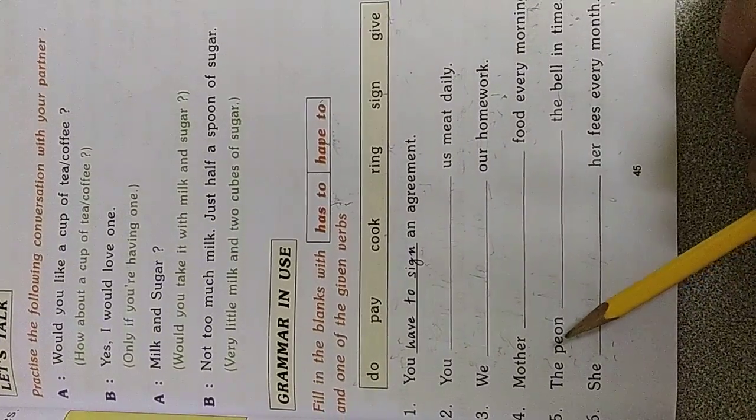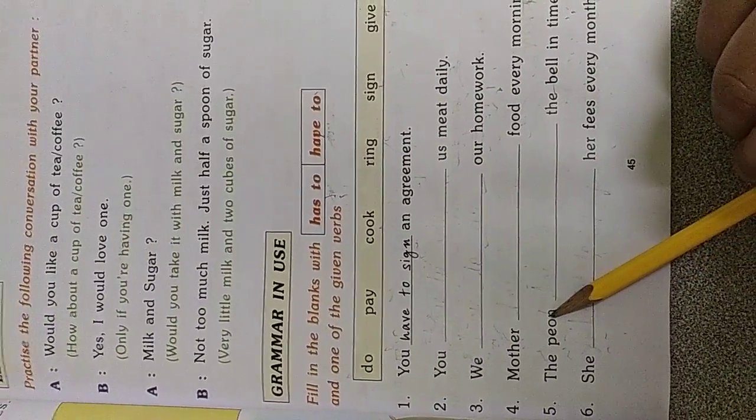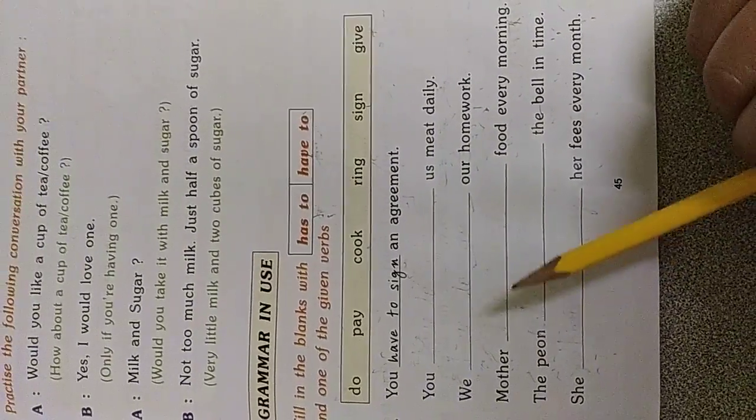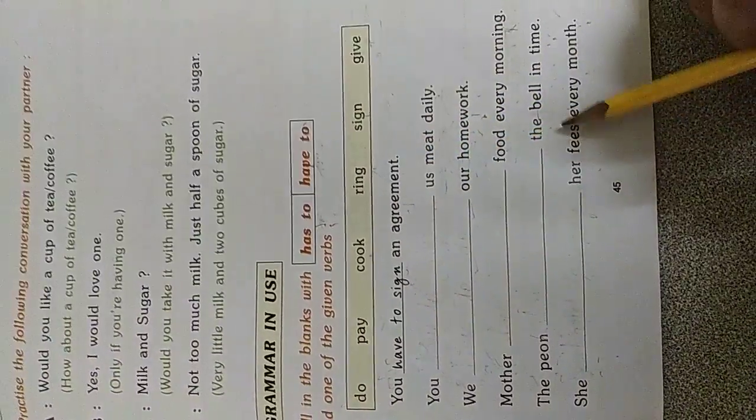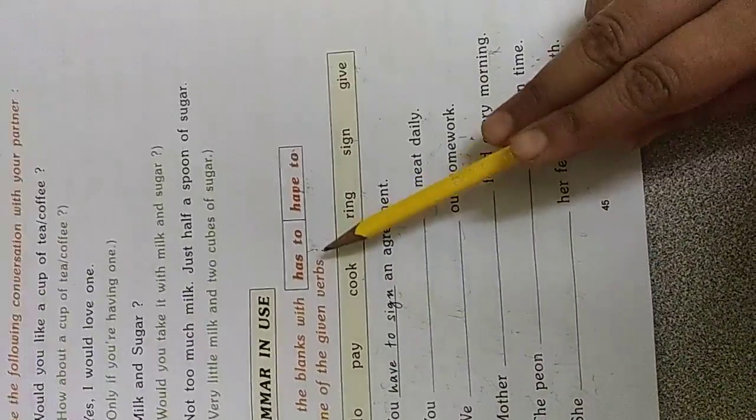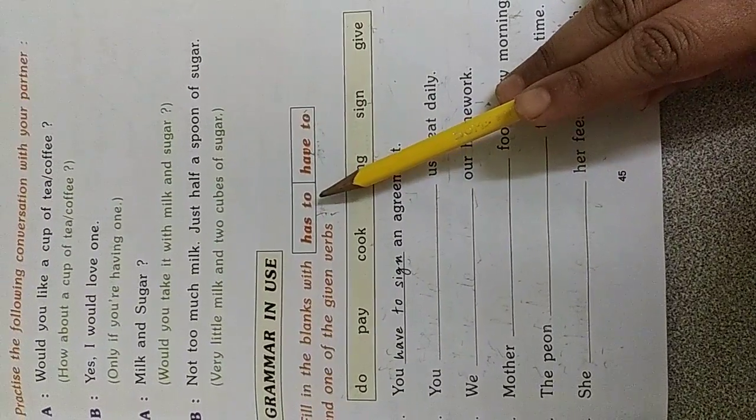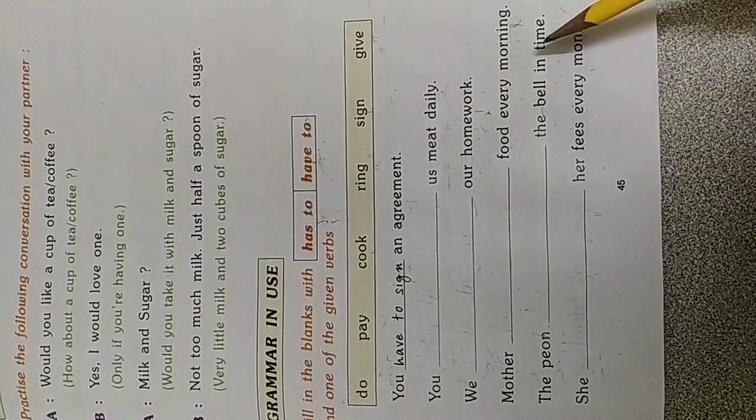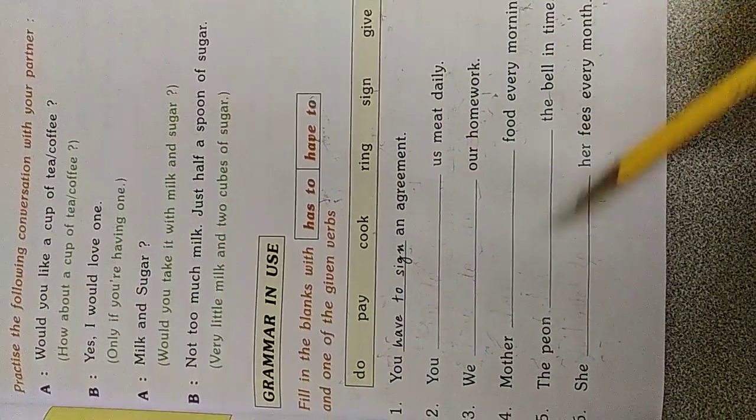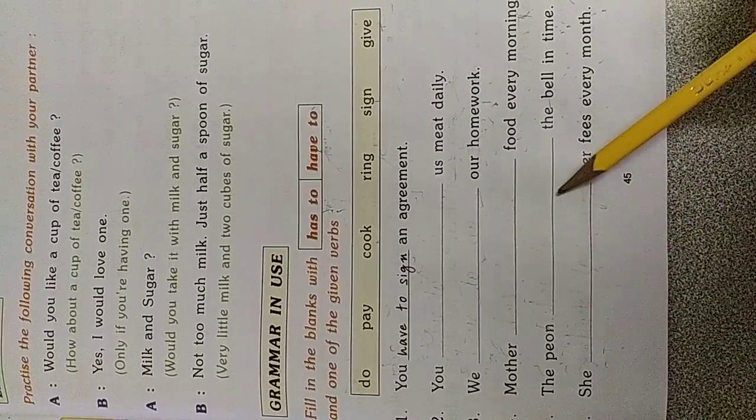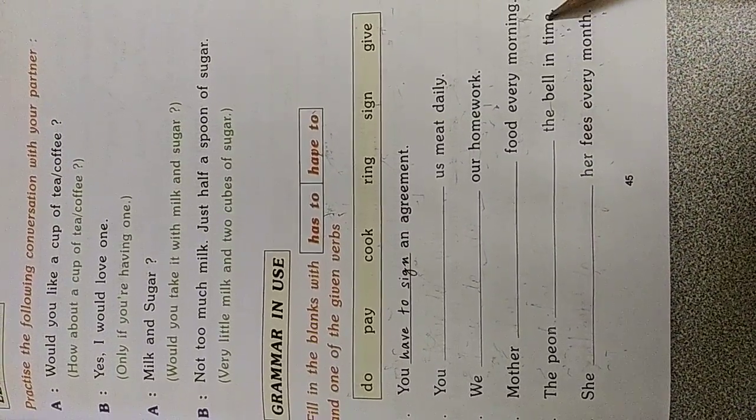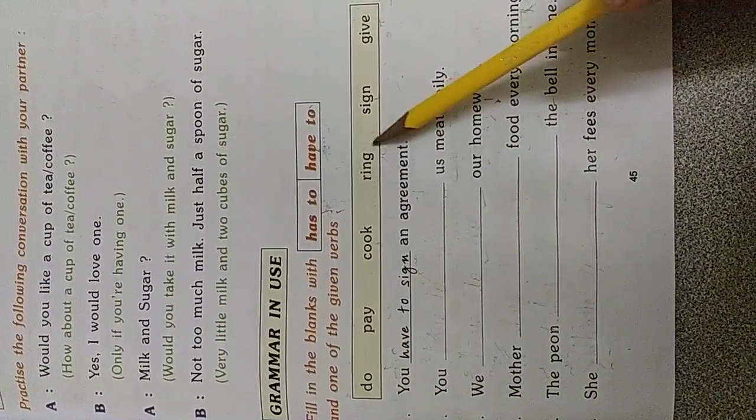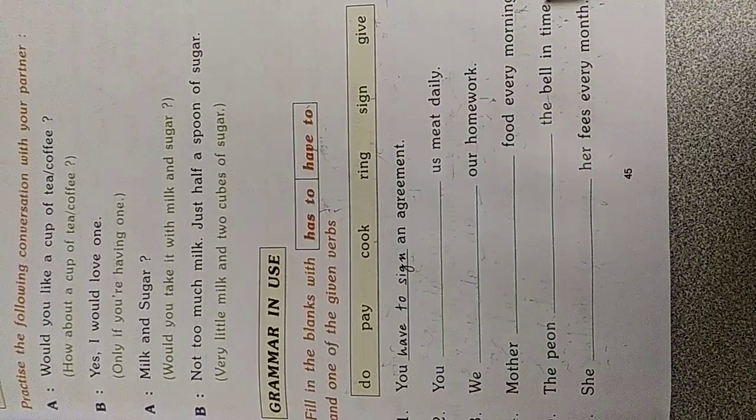The peon. What is the work of the peon? To do his work, to do his job. What is his job? To ring the bell. So, he has to. The peon has to ring the bell in time. The peon dash the bell in time. The peon has to ring the bell in time.